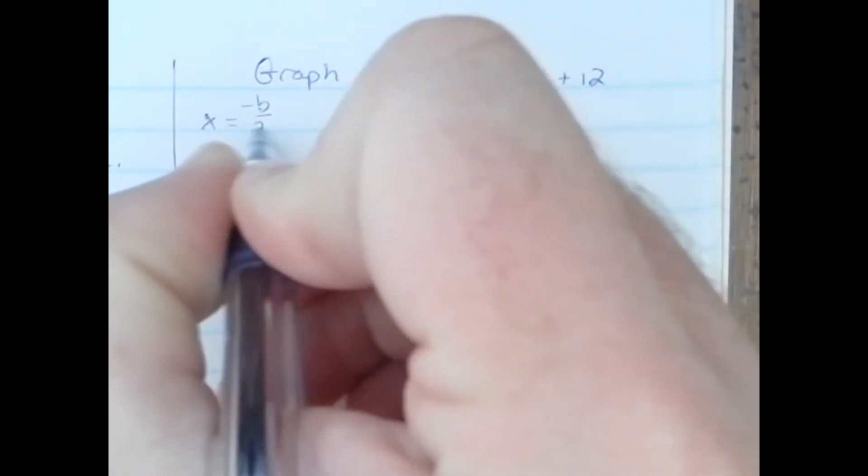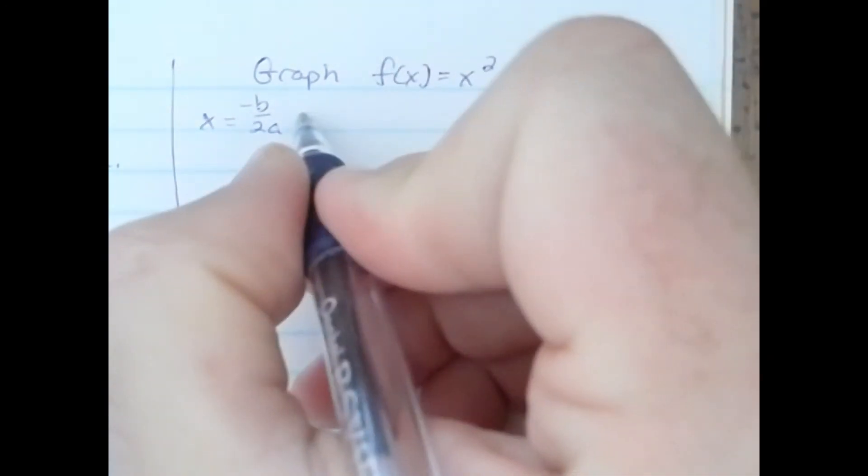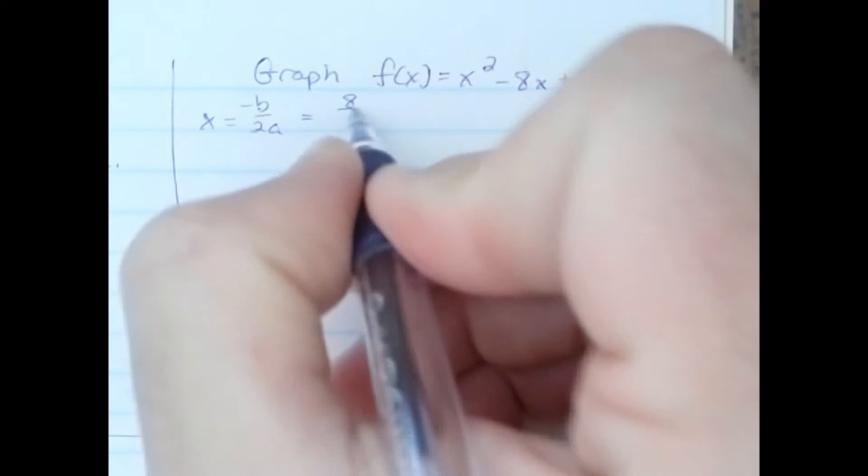First let's find the vertex. x equals negative b over 2a. Negative b is 8, 2 times a is 2.